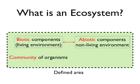Firstly, let us define what an ecosystem is. An ecosystem is made up of biotic components, which are living organisms, namely plants and animals. These organisms interact with one another, for example in a predator-prey relationship or through reproduction. Therefore, these living things can be said to be a community of organisms.